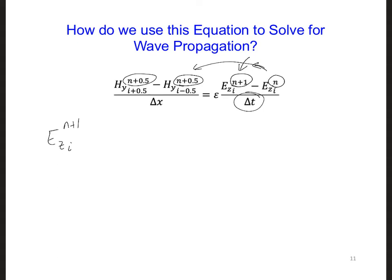We're going to get that this is equal to Ez(i) at time step n plus dt over epsilon—here's your epsilon—we also had to divide by epsilon delta x, and that multiplied by the Hy's.